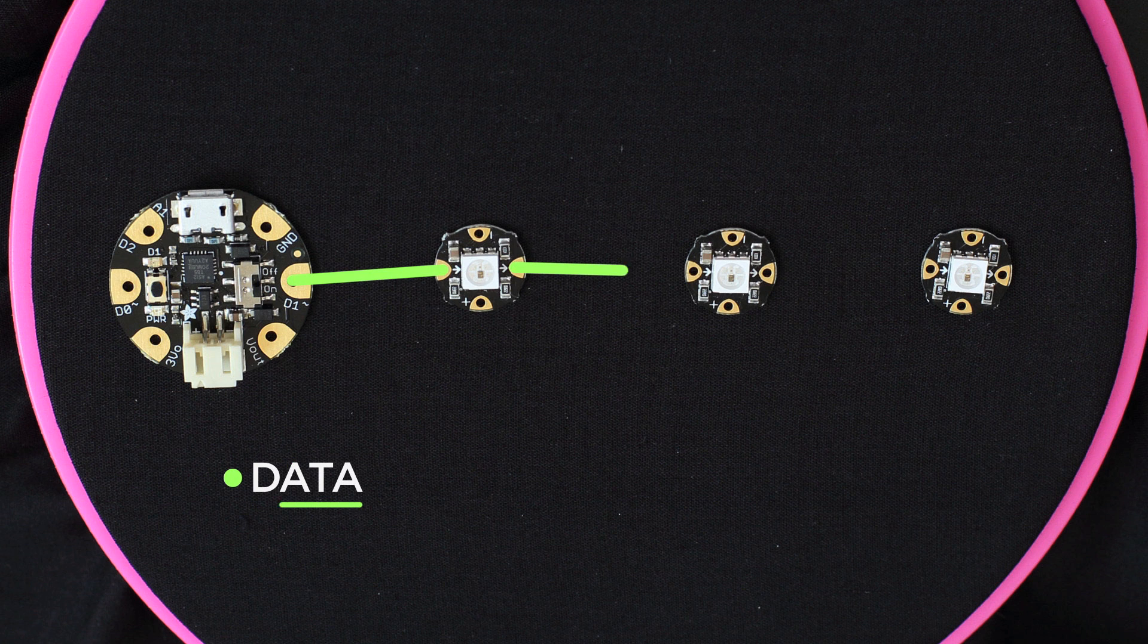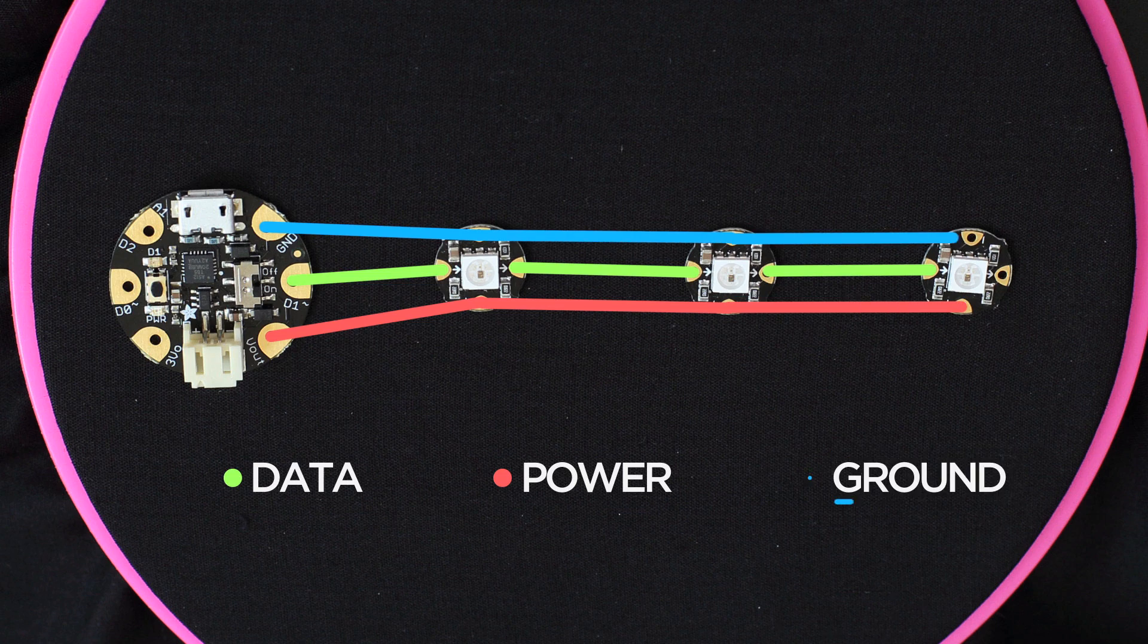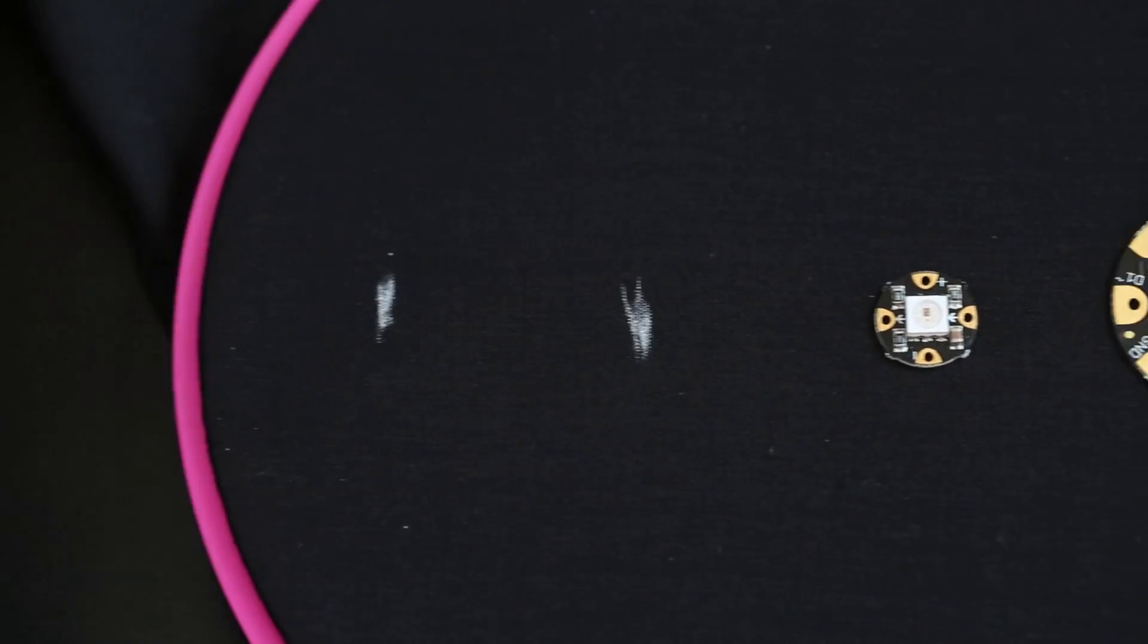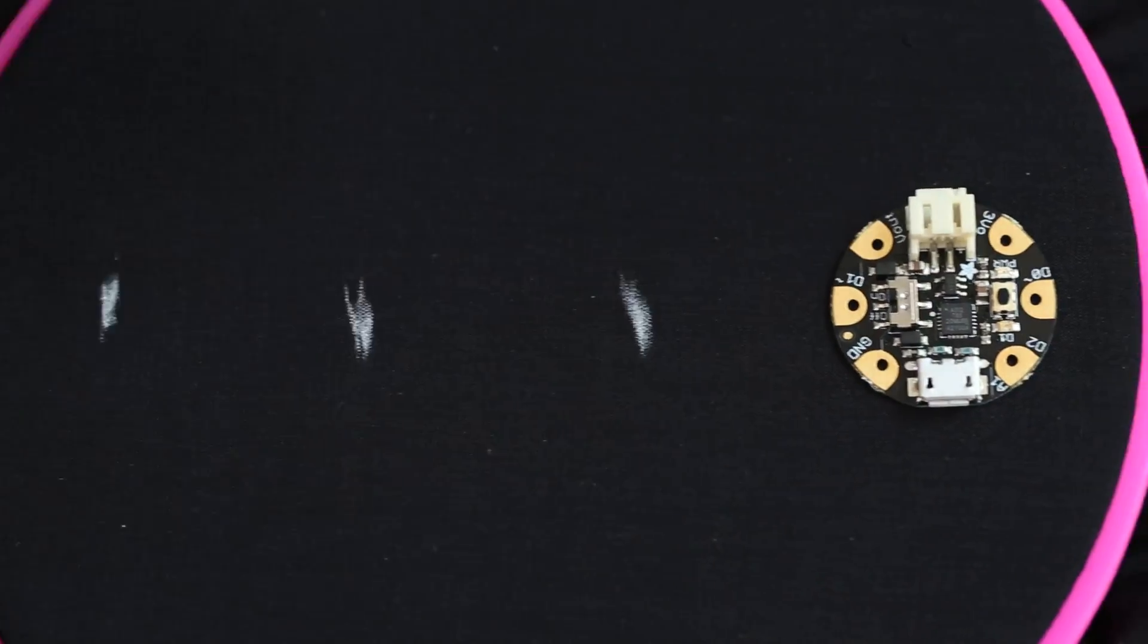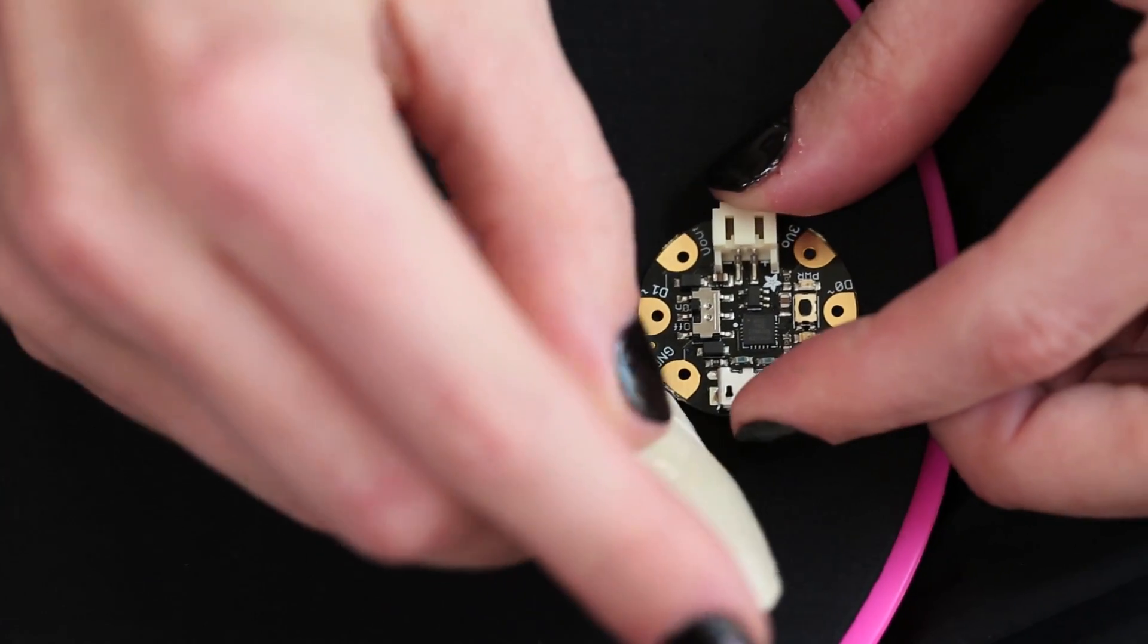I always stitch the center data lines first, then follow up with the power and ground buses. Before you start stitching, mark where your components will go with tailor's chalk, a disappearing marking pen, or sewing pins.